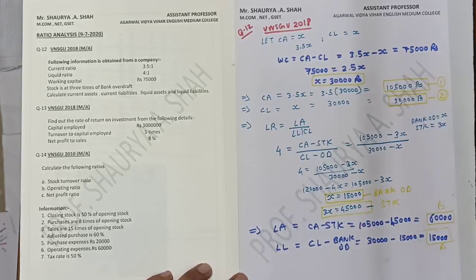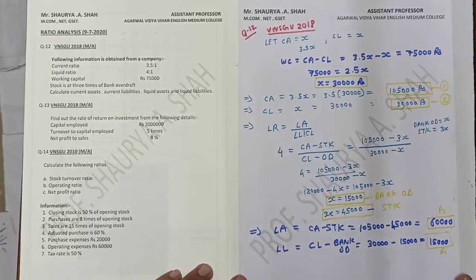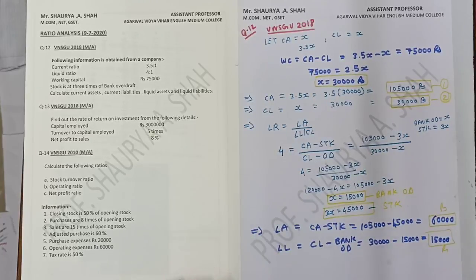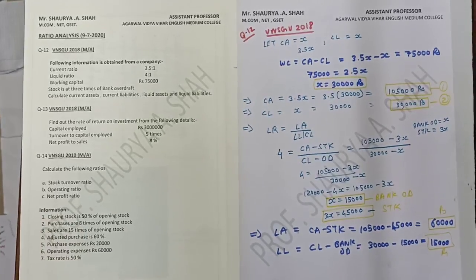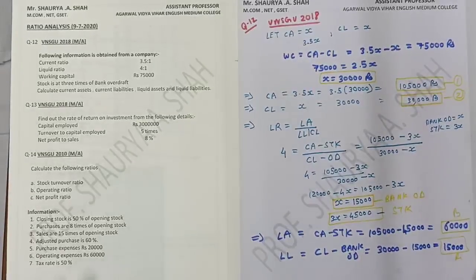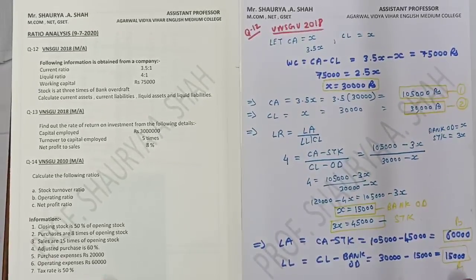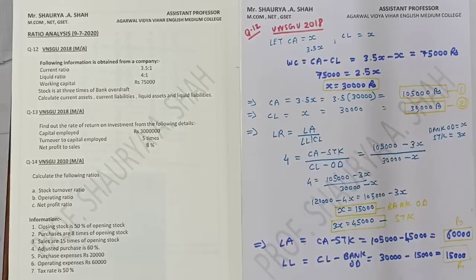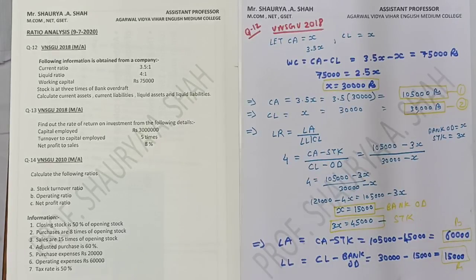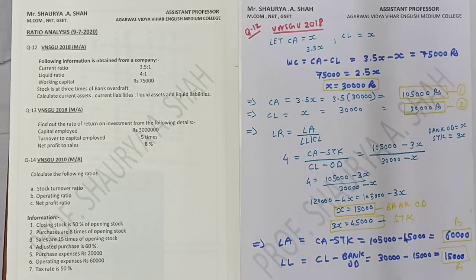This is a four-mark or three-mark sum which is asked in your exam repeatedly, so you need to be clear with this part. To summarize: current assets is 1,05,000, current liabilities is 30,000, liquid assets is 60,000, and liquid liabilities is 15,000. You can find out any missing value by putting it into the equations already given in the sum.